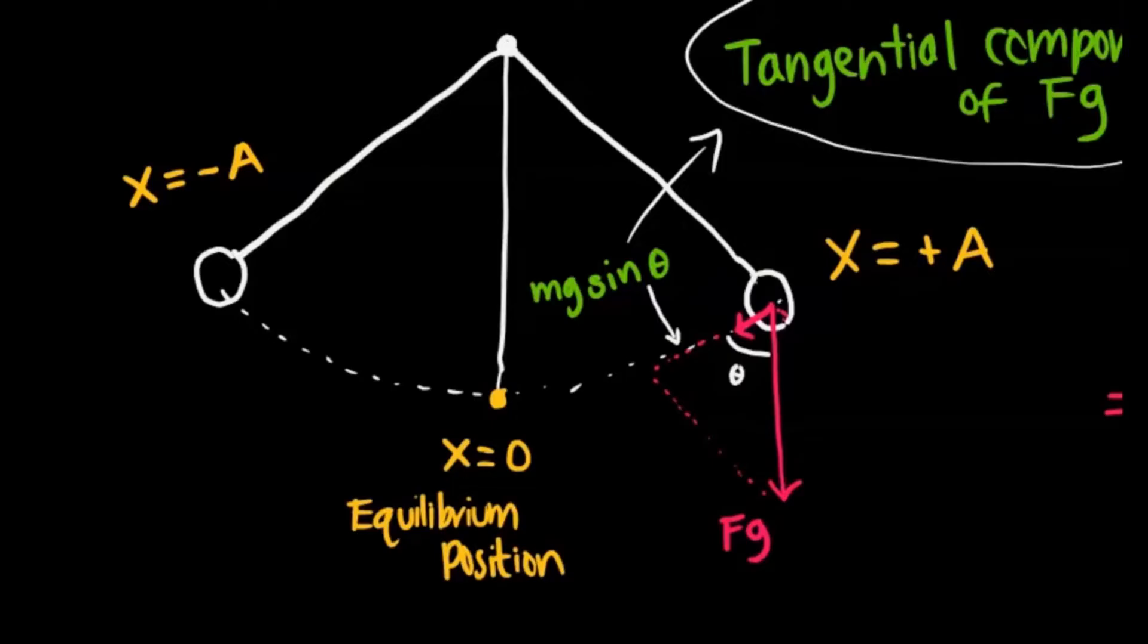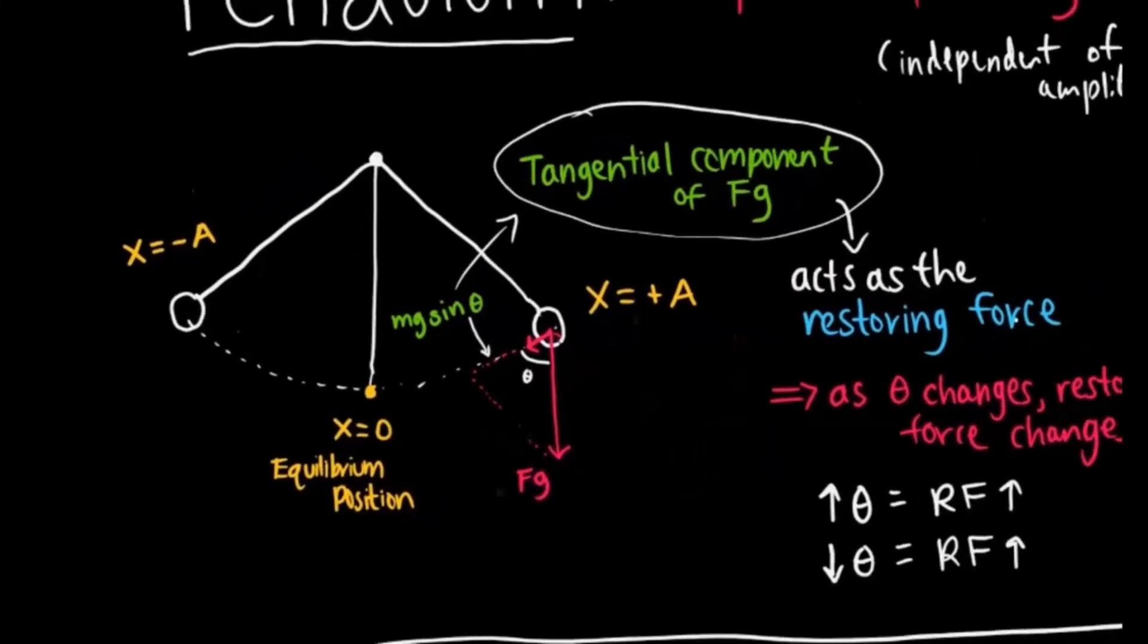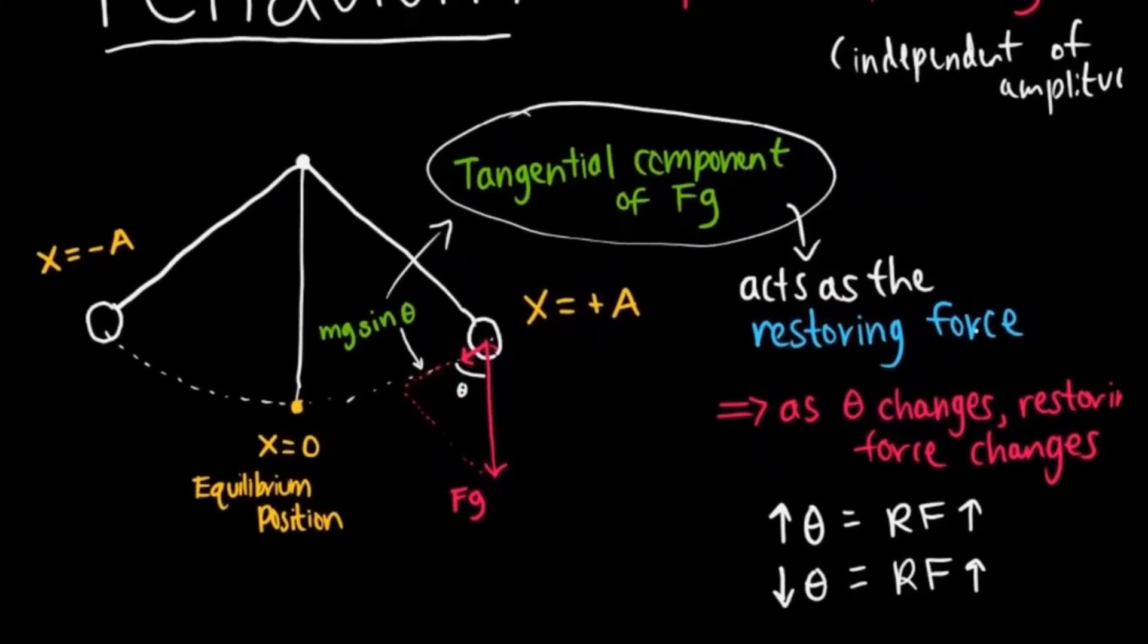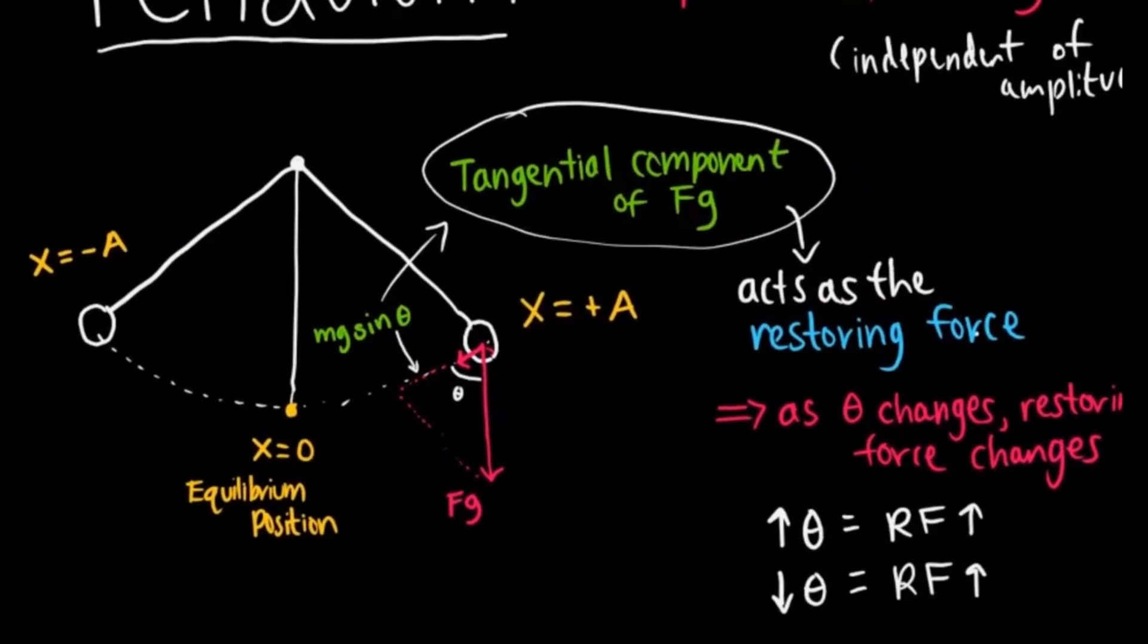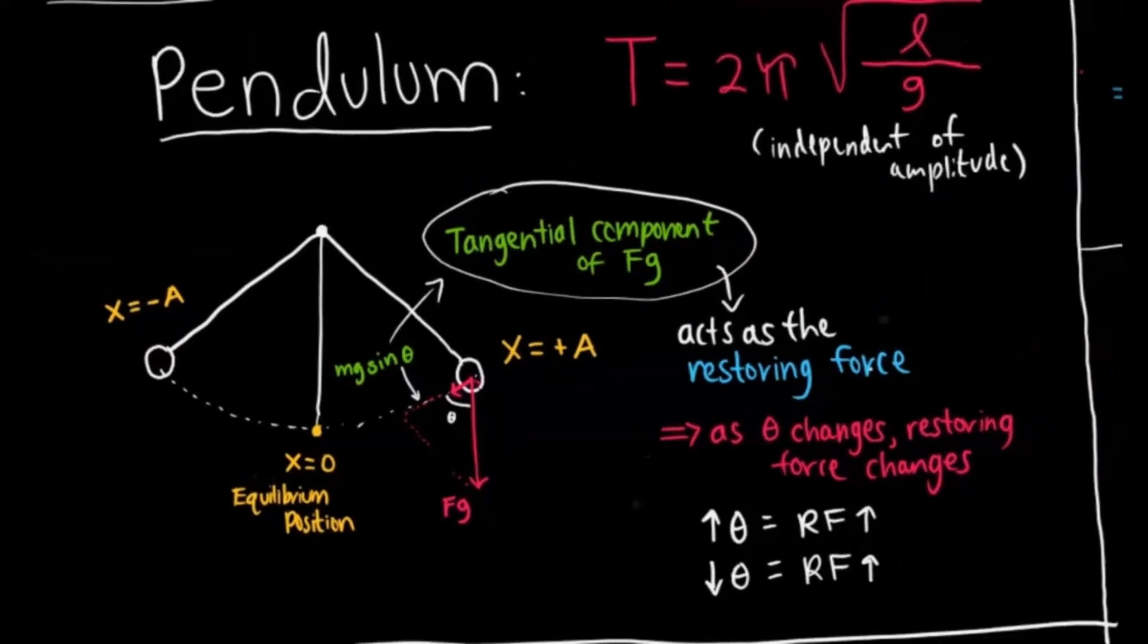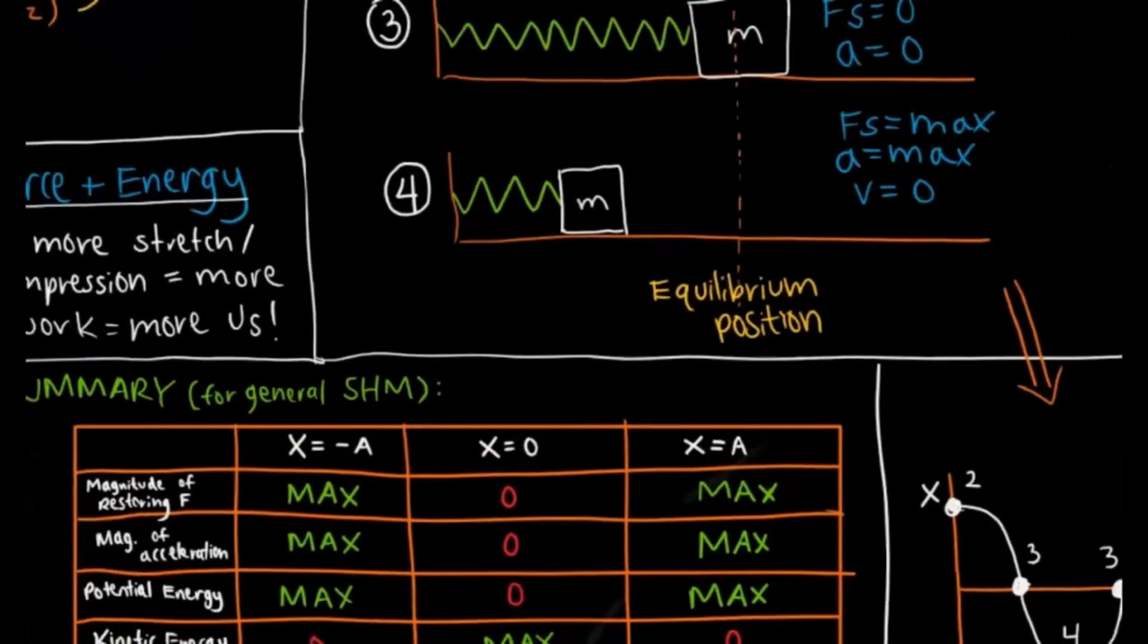So it's going to go from its maximum amplitude position to its maximum negative amplitude position. And as you increase that angle of release, the initial release position, that's always going to affect the mg sin θ for the tangential component of Fg, and therefore your restoring force is also going to change.